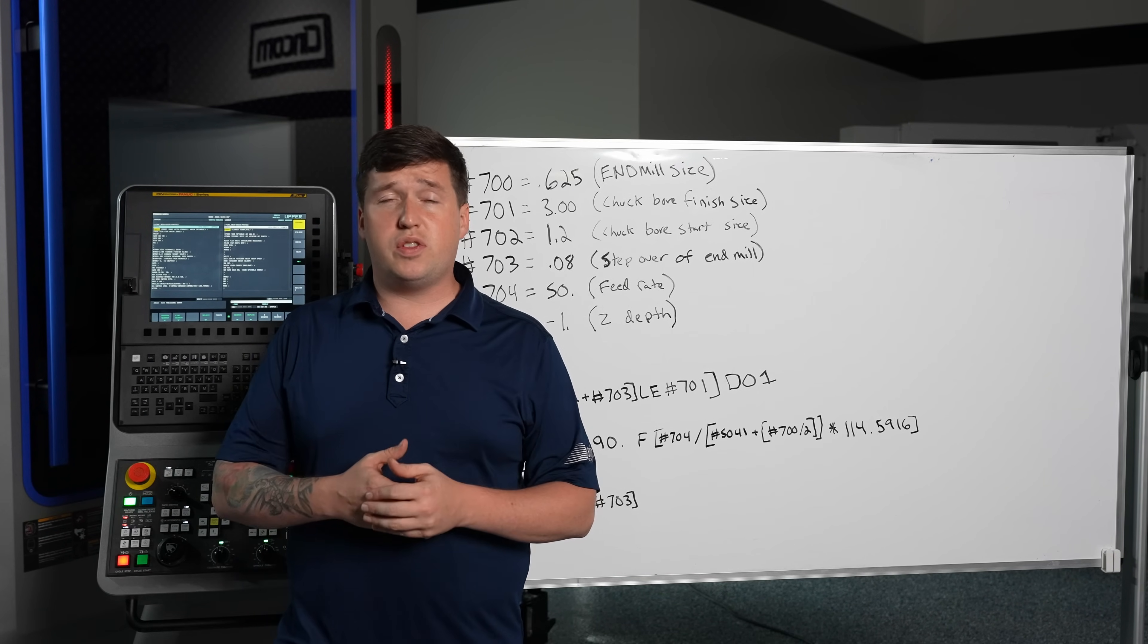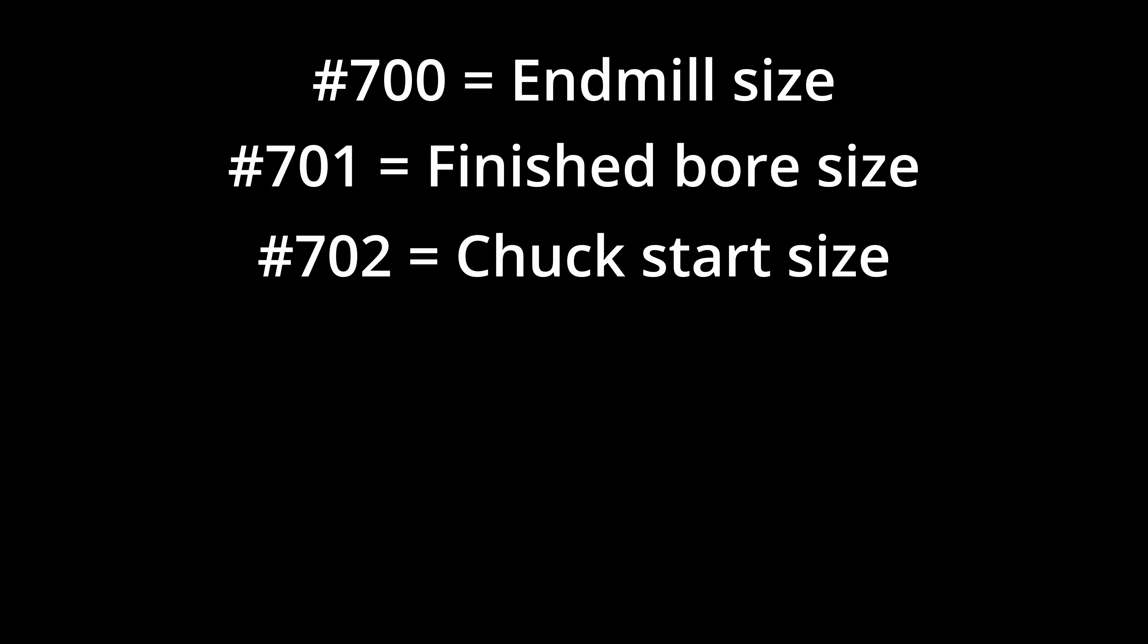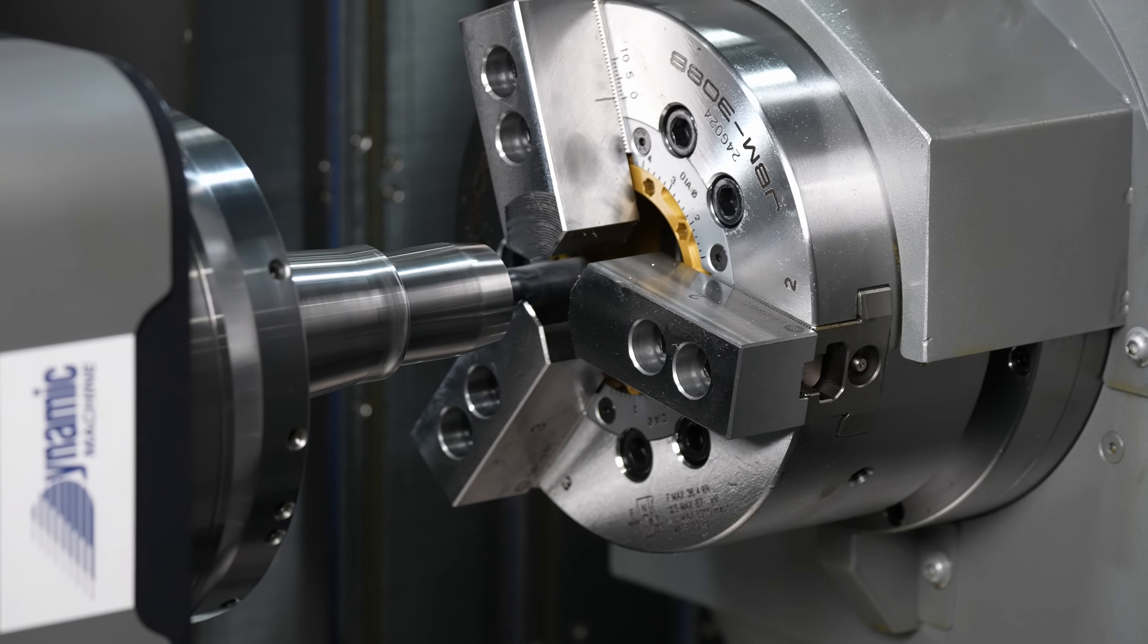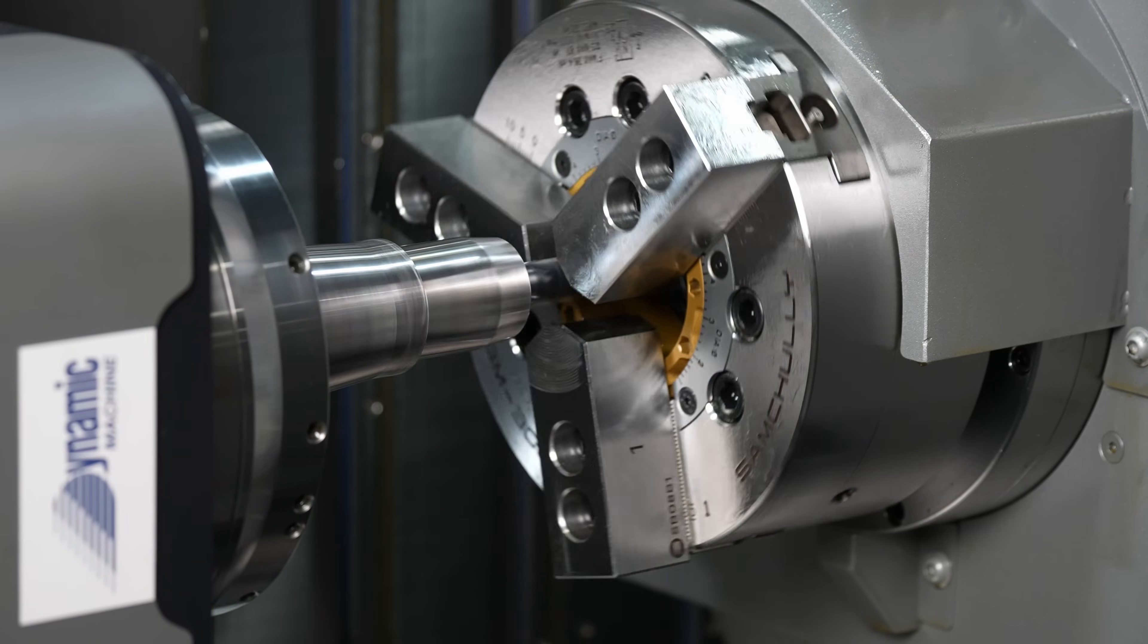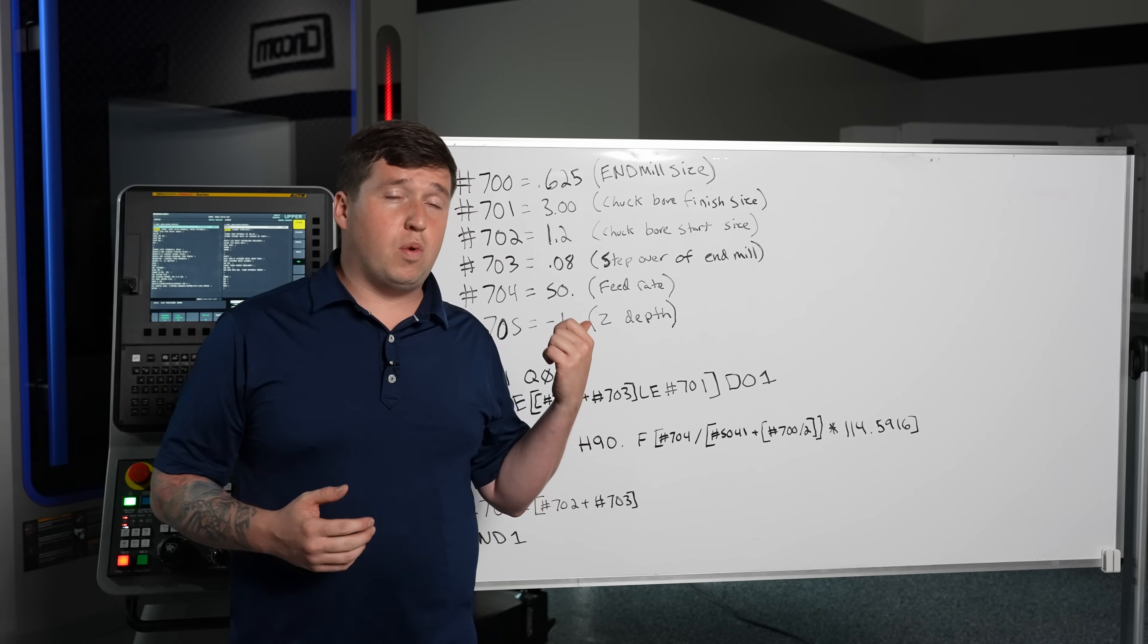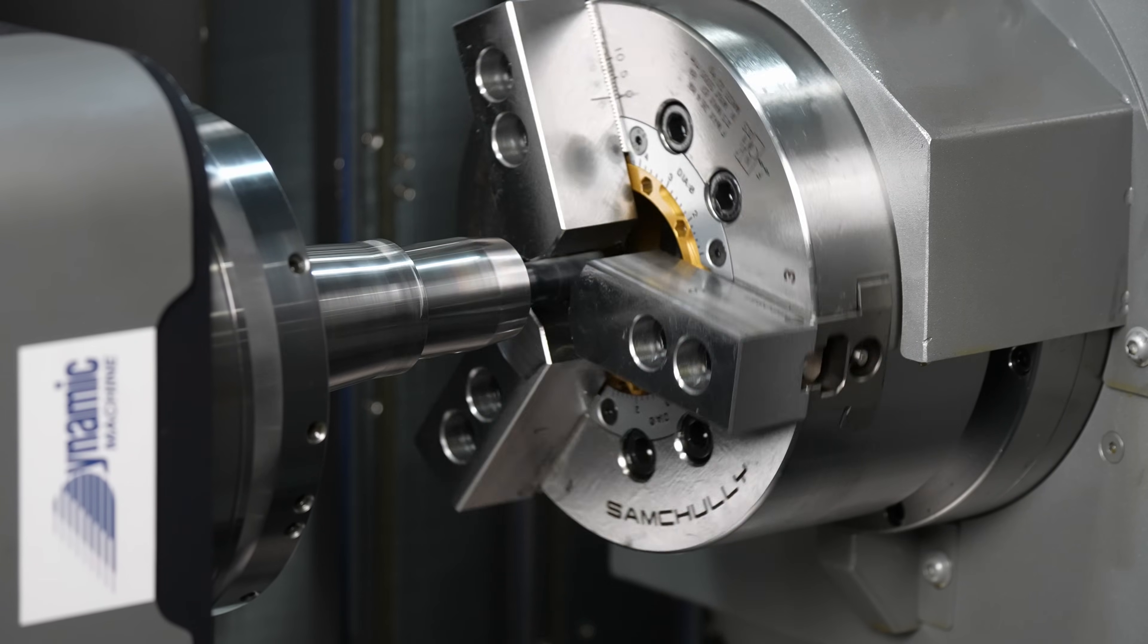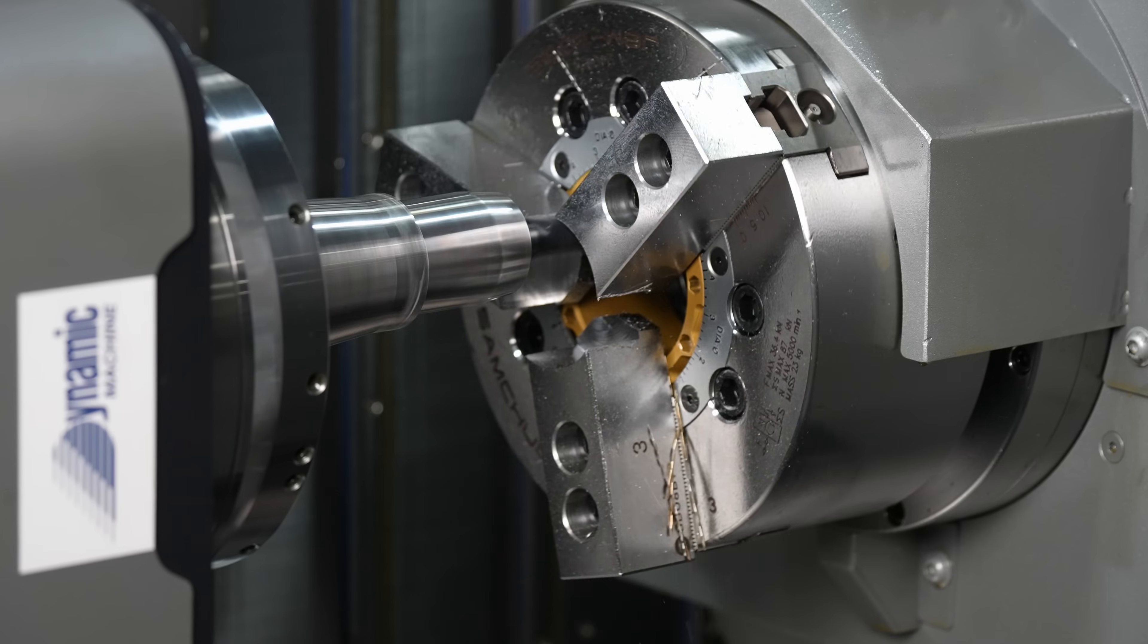Next is pound 702. This is going to be the chuck start size. You need to figure out the lowest diameter where you need to start cutting so that way you don't waste any time. Now for me it was roughly 1.2 so what this macro is going to do is it's going to start at diameter of 1.2 and work its way up to 3 inches.